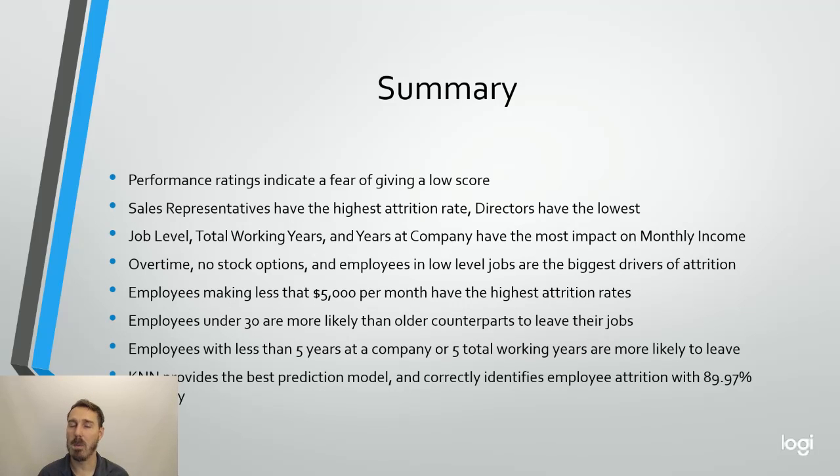I wanted to talk a little bit about performance ratings. We only saw threes and fours. We didn't see any ones and twos. That tells me there might be a fear of giving low scores and we might need to talk to management about how they're appraising people. We talked about the major drivers. We talked about for monthly income and the major drivers of attrition. Some that we didn't talk about though, those employees making less than $5,000 a month, the employees under 30 and the employees with less than five years at a company or five total working years are the most likely to leave. And then again, KNN is the best prediction model for attrition and the multiple linear regression is the best for monthly salary.